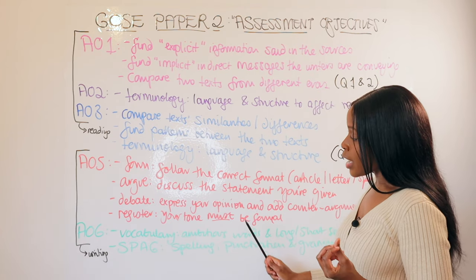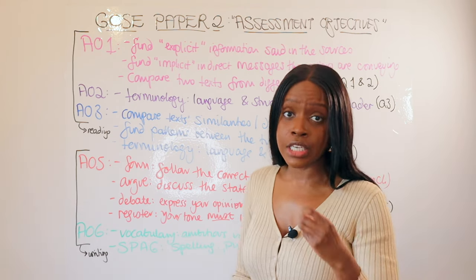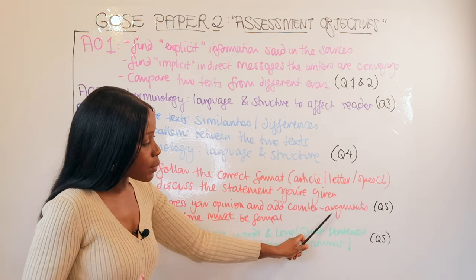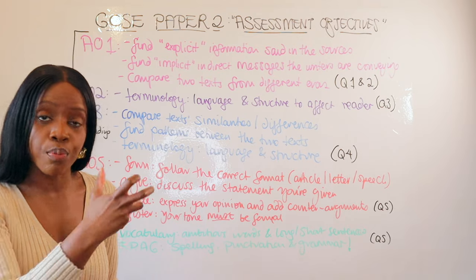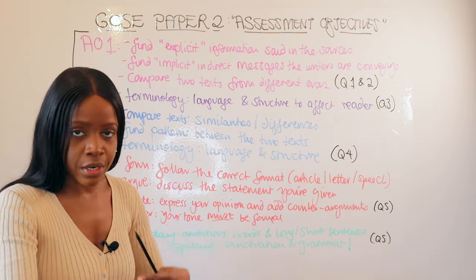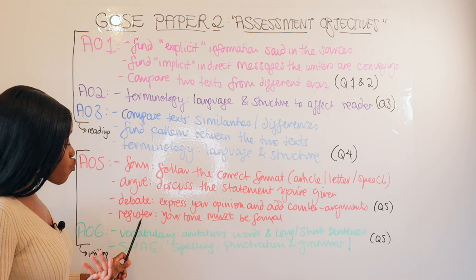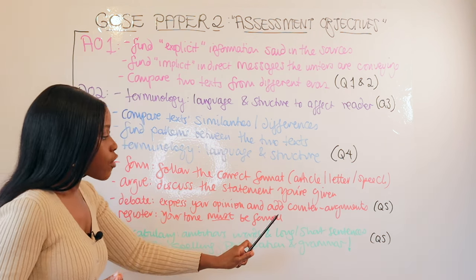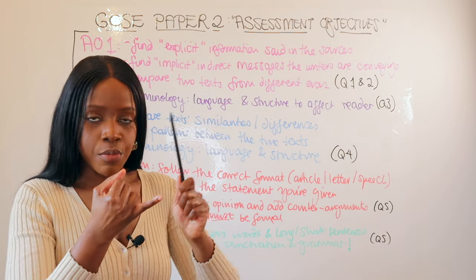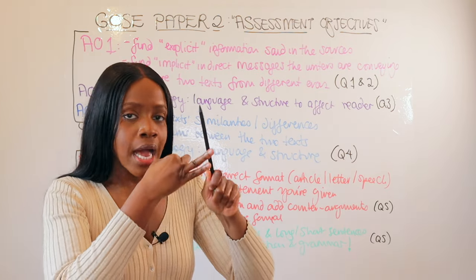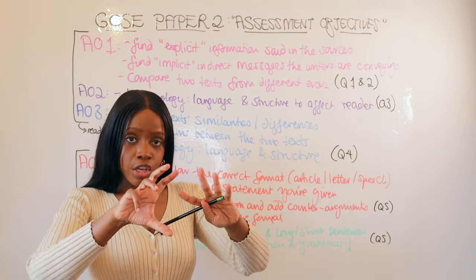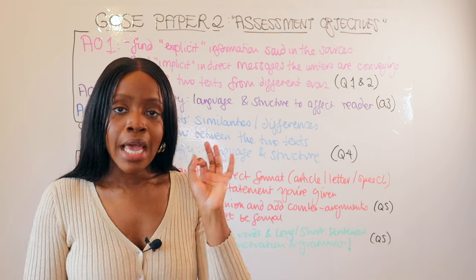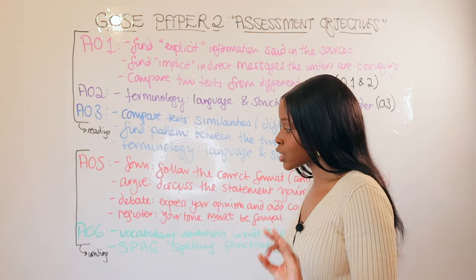In addition to expressing your opinion, you also need to debate — showing counter arguments for why people would disagree with your belief. You should include things like anecdotes, made-up statistics and examples. Finally, AO5 tests register: this is just a fancy way of saying are you able to write formally? No unnecessary abbreviations, no informal language — just make sure you write formally regardless of whether it's an article, letter or speech.